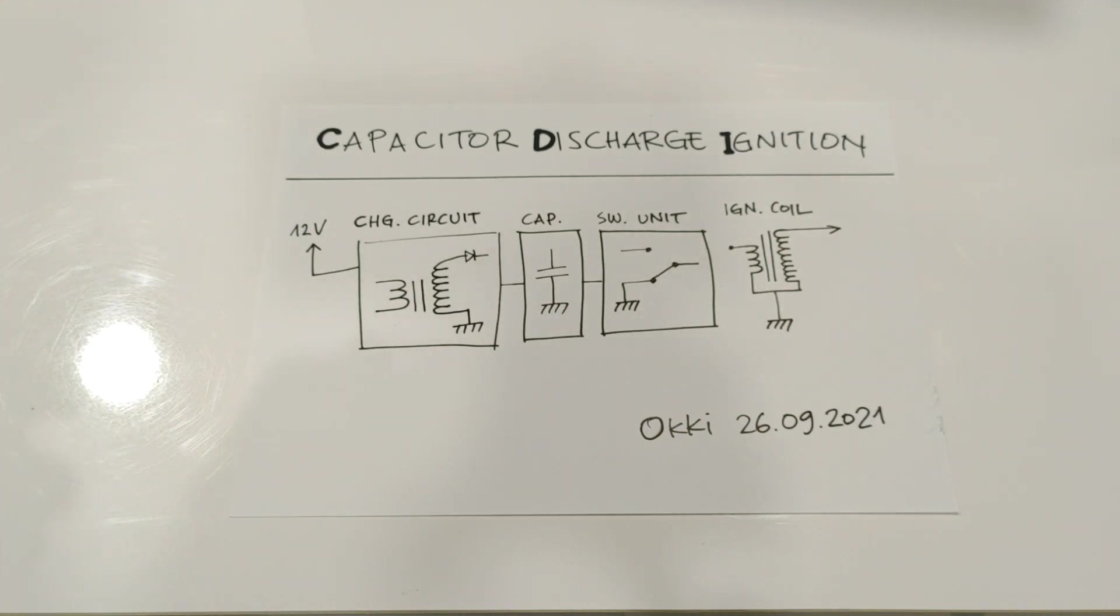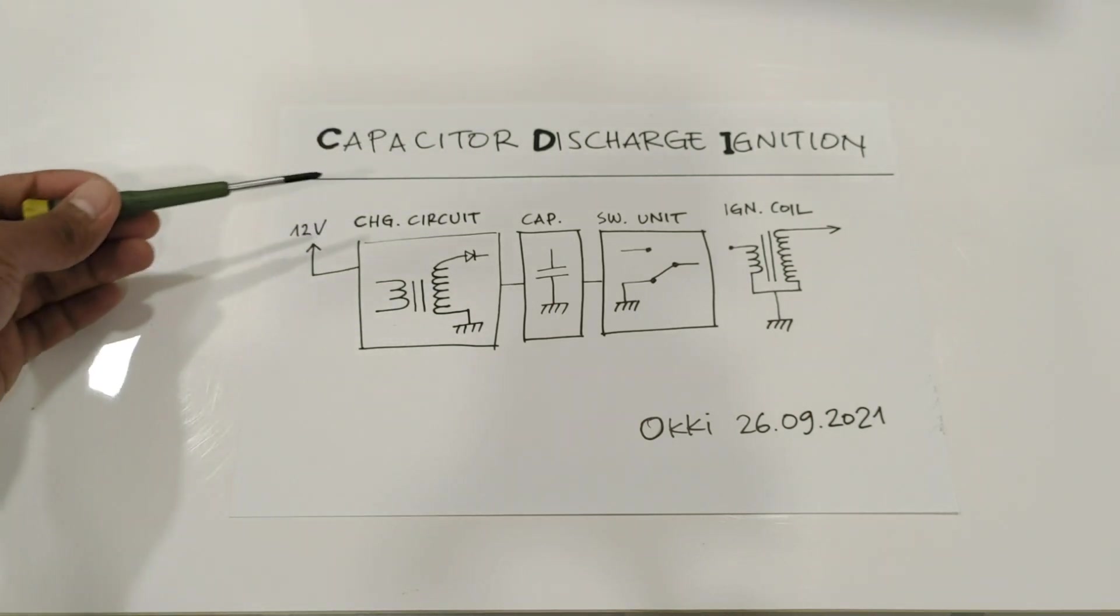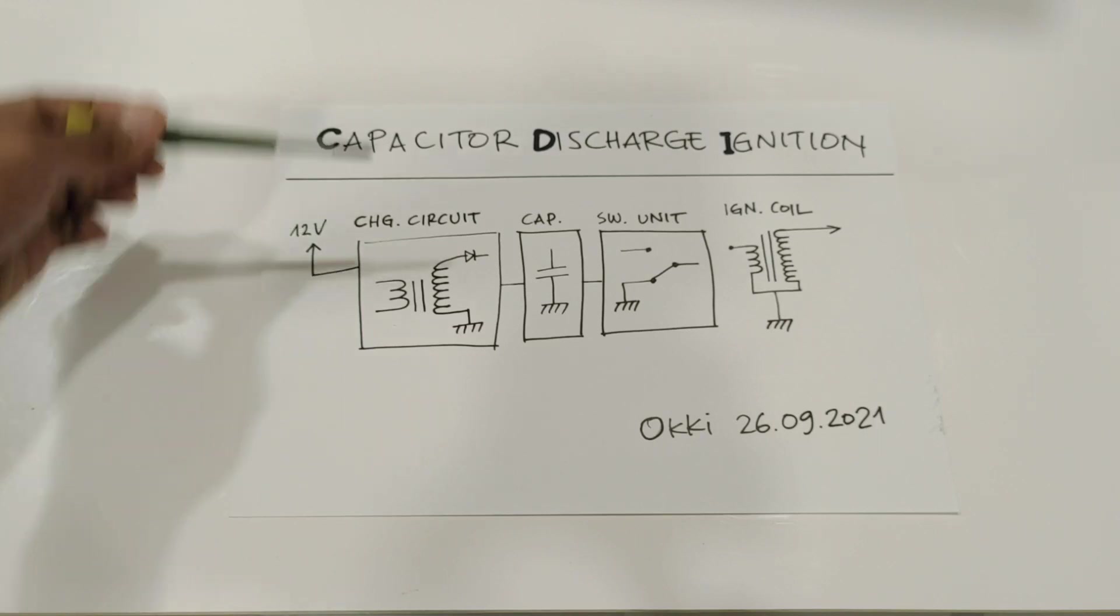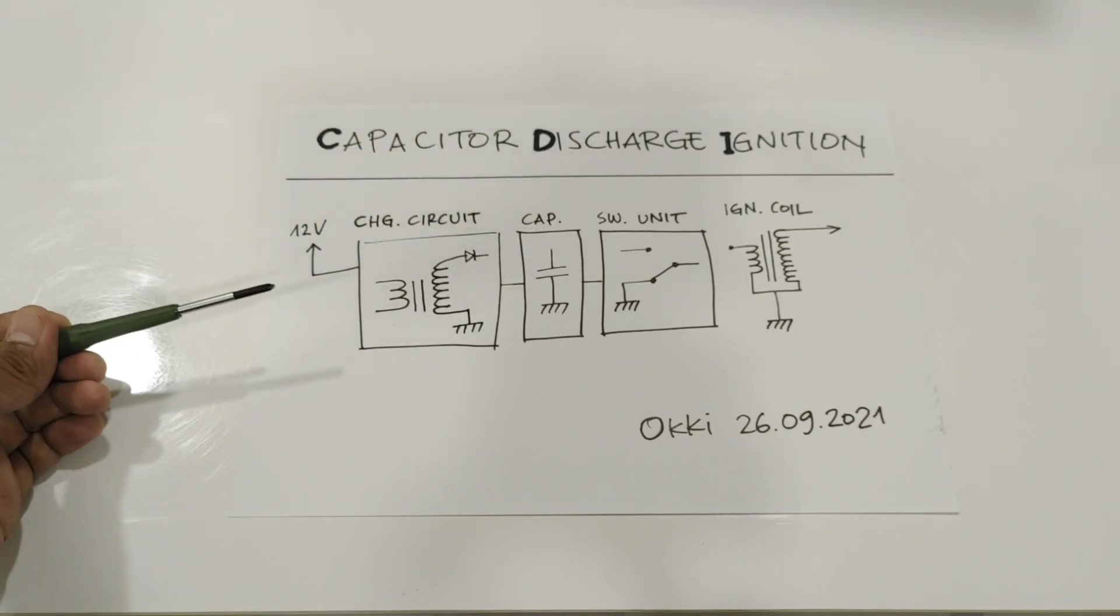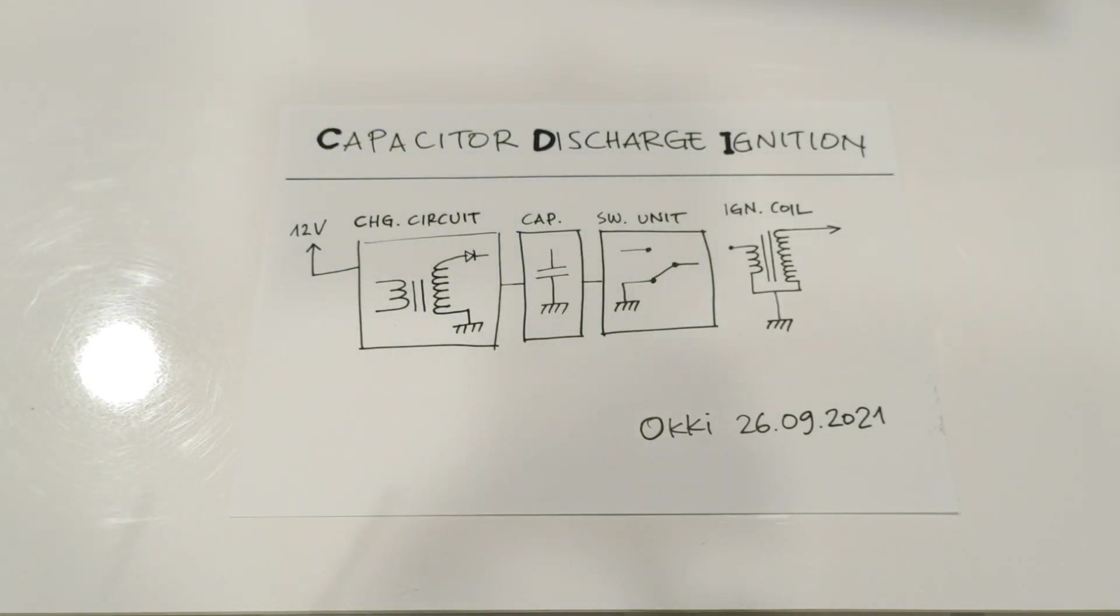The first part is the charging circuit, the second part is the capacitor, and the third part is the switching unit.